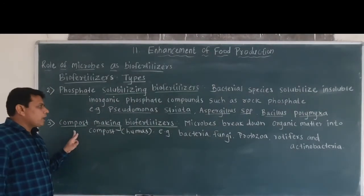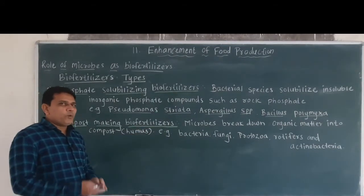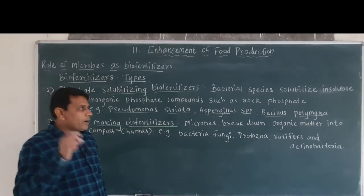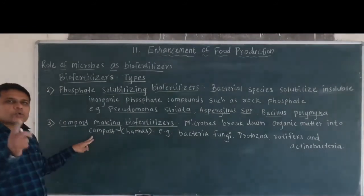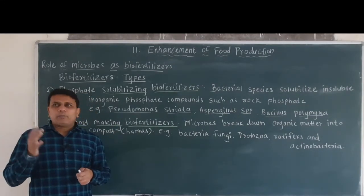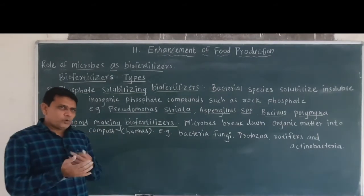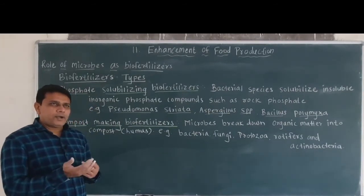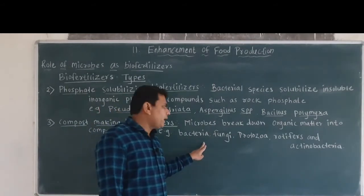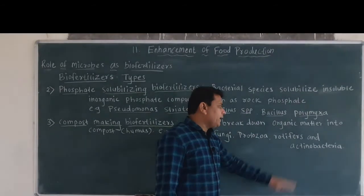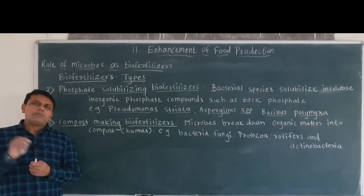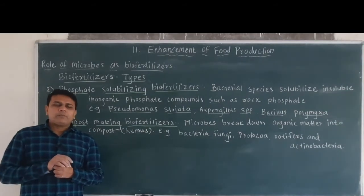The third type of biofertilizer is compost-making biofertilizers. These involve microorganisms or microbes which break down organic matter into simple form, producing compost or humus. The dead remains of plants such as leaves and branches are decomposed, and this organic matter is converted into compost or humus by organisms like bacteria, fungi, protozoa, rotifers and actinobacteria. This compost or humus is rich in different kinds of minerals.